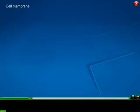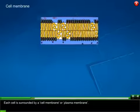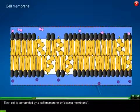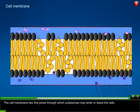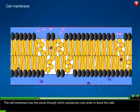Cell membrane: Each cell is surrounded by a cell membrane or plasma membrane. The cell membrane has fine pores through which substances may enter or leave the cells.